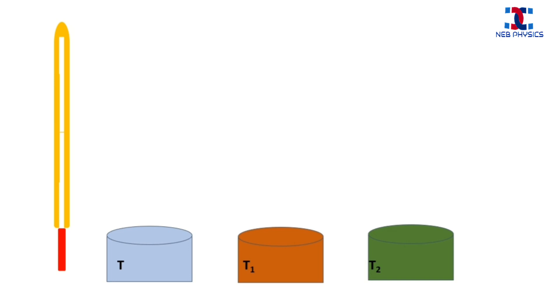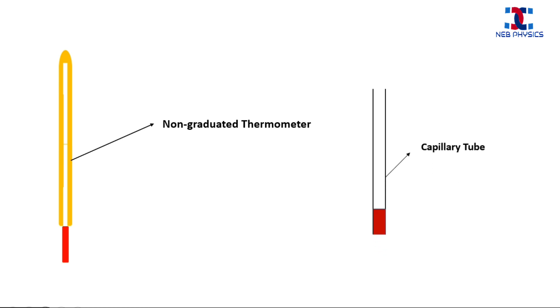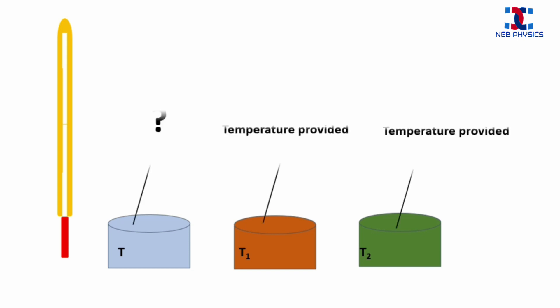Now let's see the next application of zeroth law. In this animation, you can see there is a thermometer and three beakers of liquid at different temperatures. Note that the thermometer we are using is a non-graduated thermometer, so there is no measuring scale on it. We could also use a capillary tube instead. The condition is: we are already provided the temperatures T1 and T2 of the second and third beakers respectively, but we don't know the temperature T of the first beaker. Using zeroth law, we can calculate T.